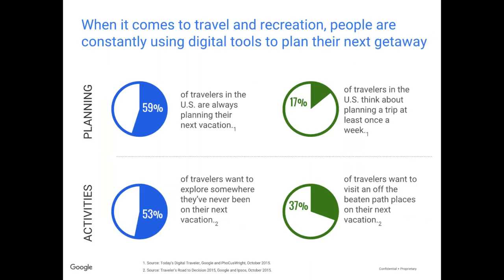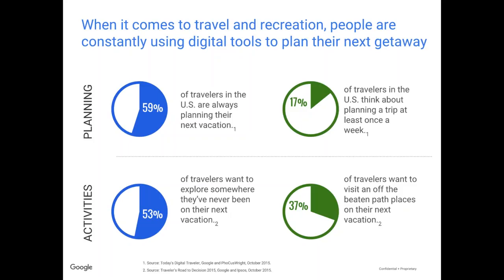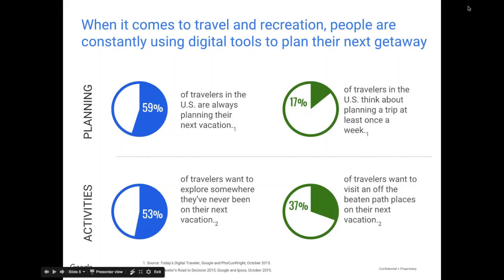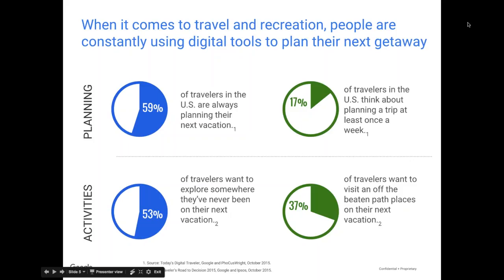Diving into your vertical — travel and recreation or leisure — a couple of data points that might be really interesting: when it comes to planning, almost 60% of travelers are always planning their next vacation. Whether that's far away or a staycation, it's really interesting that almost 60% of people are doing that at any given time. Travel, vacation, and leisure are much more top of mind for everyone these days, and travel as an industry is really on the rise. Another interesting data point: 17% of travelers are thinking about planning a trip once a week. So your addressable market is essentially everyone — 17% of folks you can be talking to at any given moment.